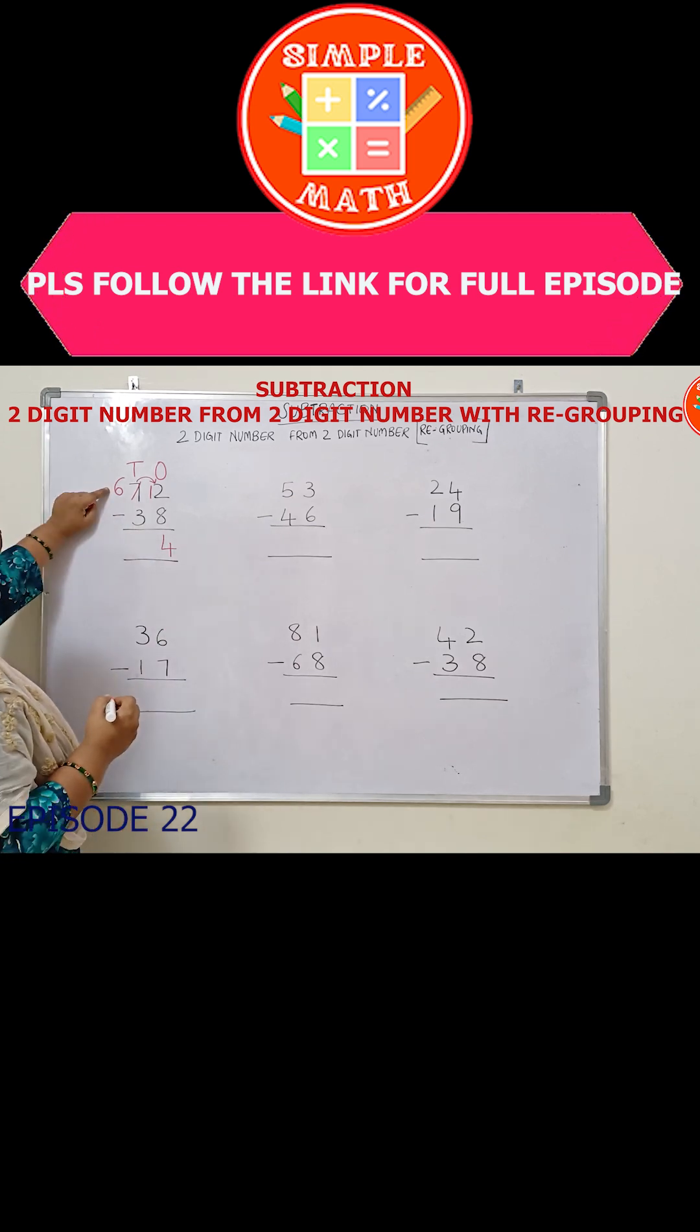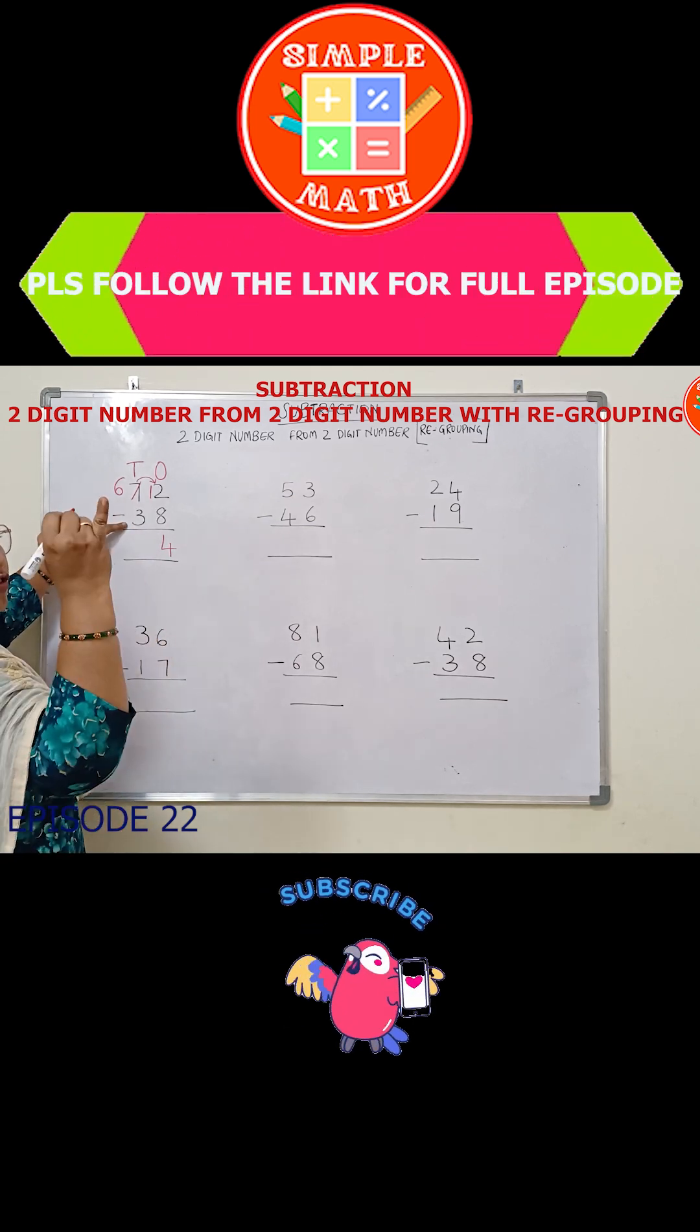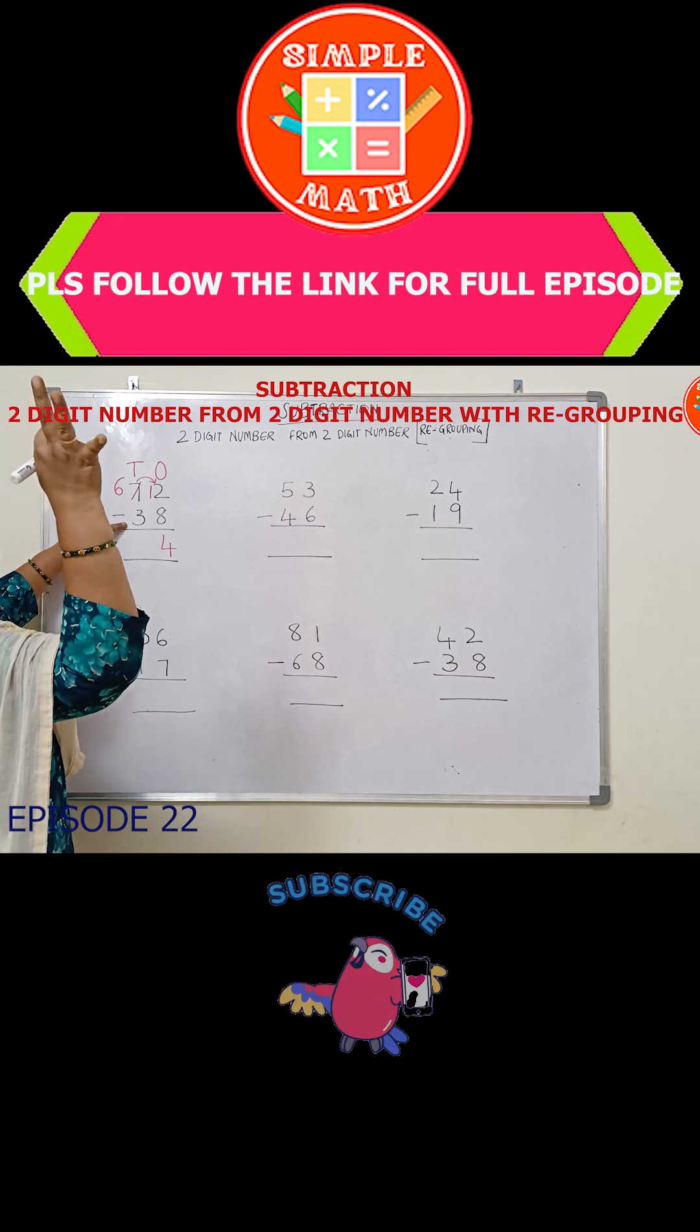Now come to the tens column. Six minus three. Three in your mind, count after three, four, five, six. How many fingers you got? One, two, three. So write three.